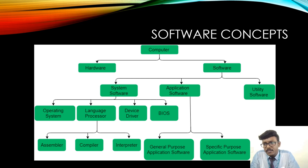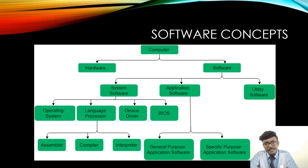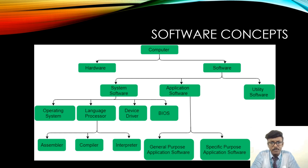Apart from system software and application software, we have utility software, which performs daily-need tasks. Examples include antivirus software, text editors, and disk defragmenter tools. Antivirus software protects the computer system from unwanted malware and viruses — for example, McAfee. Disk defragmenter tools analyze bad sectors and rearrange files in a proper order. Text editors help users take notes and create basic text files — a common example is Notepad in Microsoft Windows.